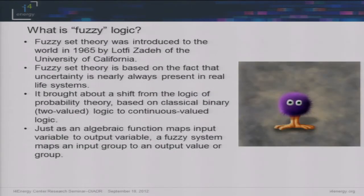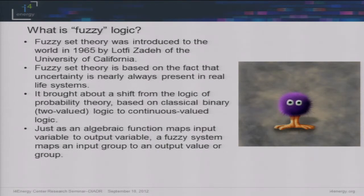Fuzzy set theory was introduced by one of Cal Berkeley's own, Professor Zadeh of Computer Science and Mathematics. He was the mastermind behind this, and it transformed the way we think about probability theory. We always had this idea that it was based on classical binary logic, and he transformed it to be a continuous value logic. The way to conceptualize it is that it's just like an algebraic function which maps an input variable to an output variable.